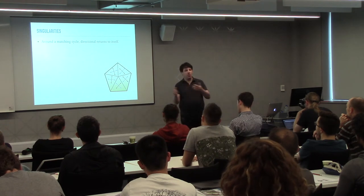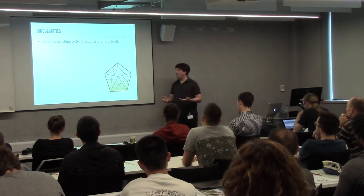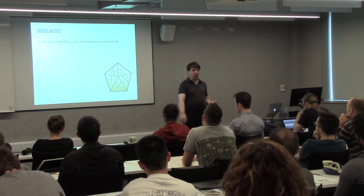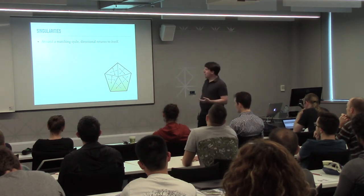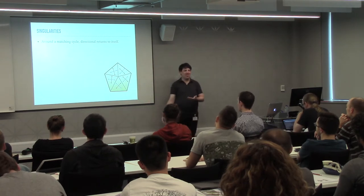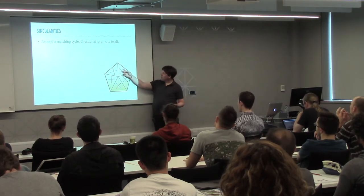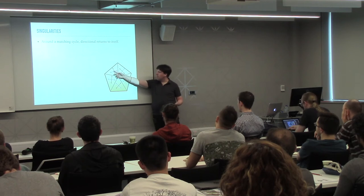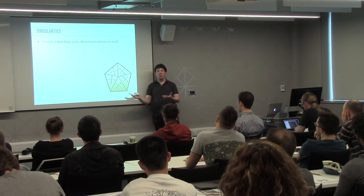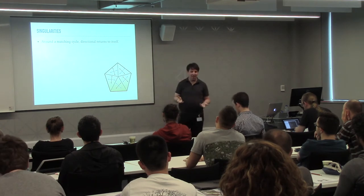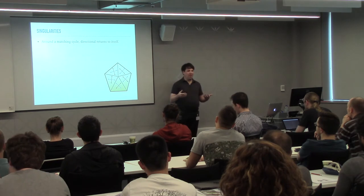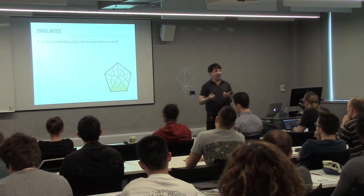What happens around cycles? Around a cycle, a directional must return to itself. If I'm matching this to that, and that to the next, and so on all the way around, all the vectors return to other vectors. But it doesn't mean they return vector-per-vector to the same place I began with.